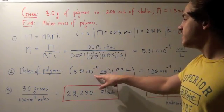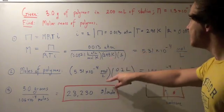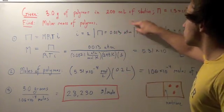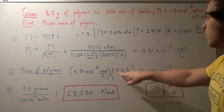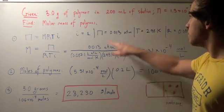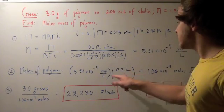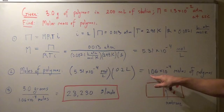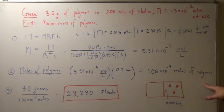5.31 times 10 to the negative 4 molar times the amount of solution we have, which is 20 milliliters or 0.2 liters because we have to convert milliliters to liters. We divide by 1,000 and we get 0.2. The liters cancel and we get 1.06 times 10 to the negative 4 moles of polymer.